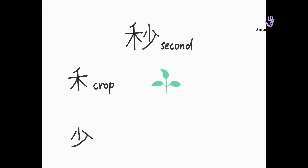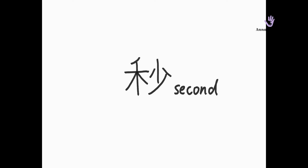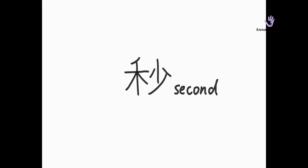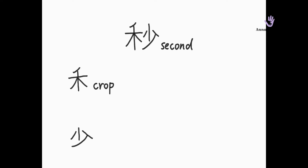The next word is miao — second. Please repeat: miao, miao, miao. Miao can be separated into two parts. The left part is he, which means crop. The right side is shao, which means few or a little. So 'a little time' is a second — it's very easy to remember, right?